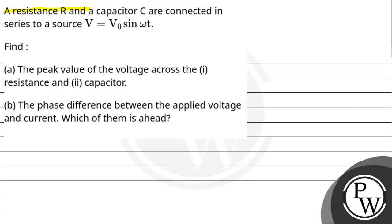Hello! Let us read this question. A resistance R and a capacitor C are connected in series to a source V equal to V₀ sin ωt.